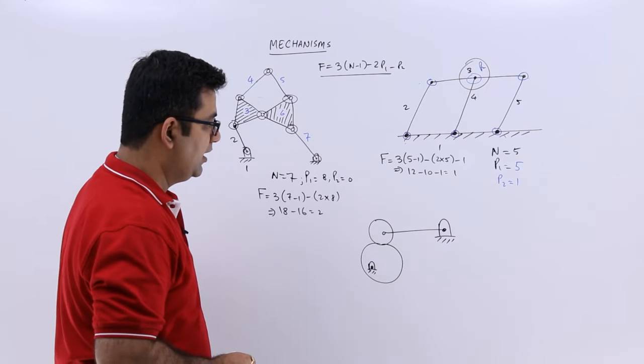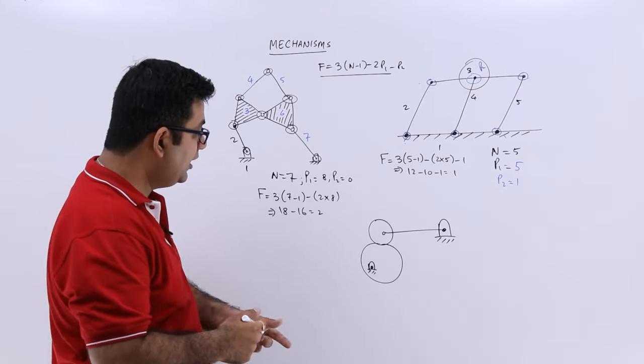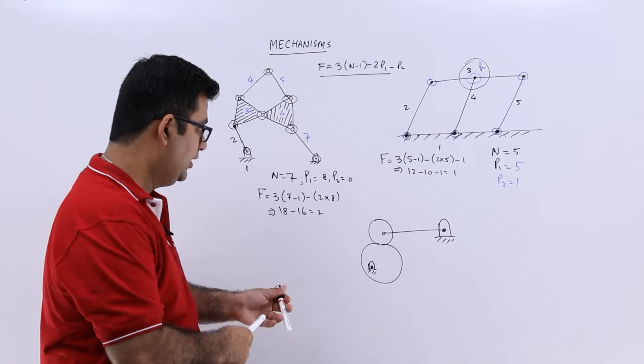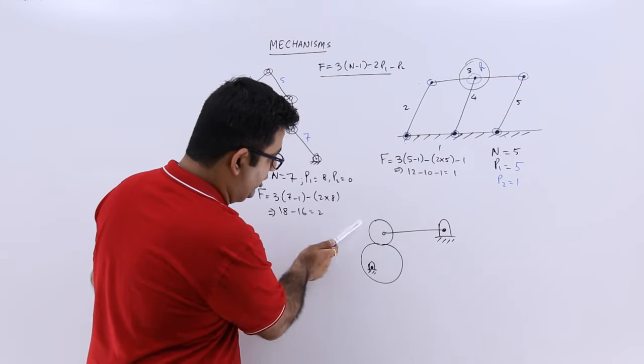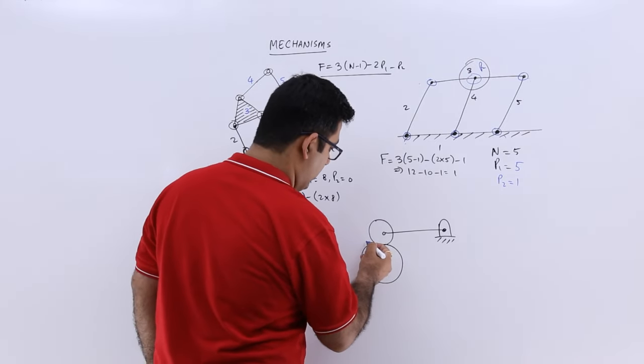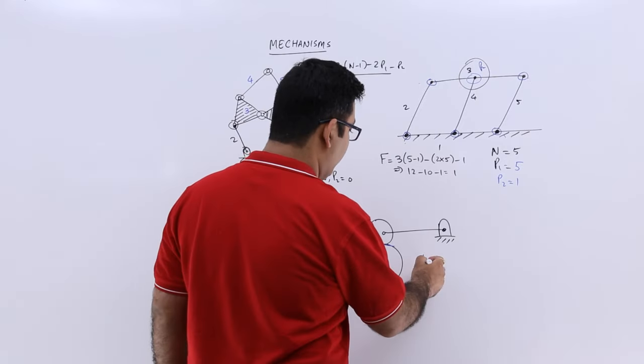Let us come to the last one. In this, the number of links... Now it clearly shows that there is a higher pair involved, that is between these two rollers, because they have a line contact or a point contact. So there is a value of p2 involved.